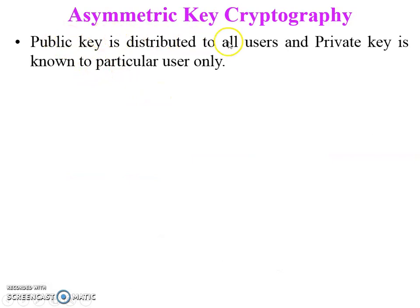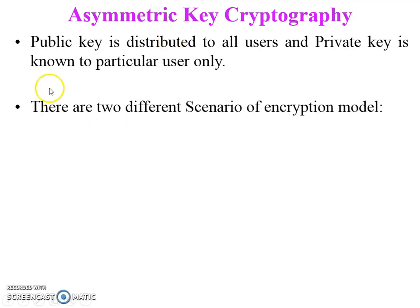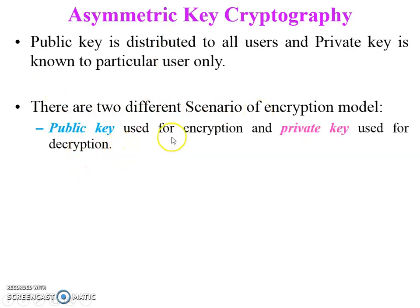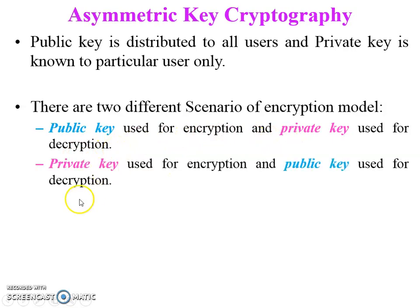The public key is distributed to all users, while the private key is known only to the particular user. If there are three users in the network, all users know each other's public key, but each user's private key is known only to themselves. There are two different scenarios of the encryption model: first, public key used for encryption and private key for decryption; second, private key used for encryption and public key for decryption.